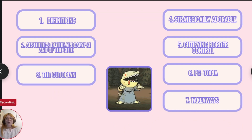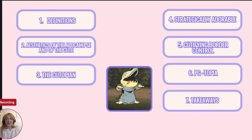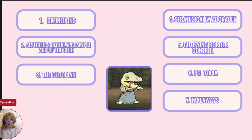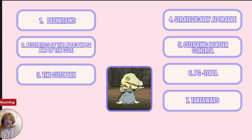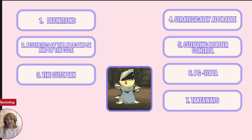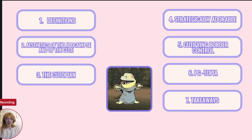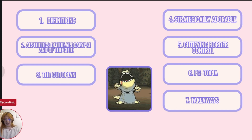Here's an overview of what we will cover today. We will start by defining some key terms that are essential for understanding the rest of the presentation. Then we'll move on to a discussion of the aesthetics of the apocalypse and how cute aesthetics are used in contrast. After that, we'll explore the cutopian, a term I use to describe games that juxtapose cuteness with serious themes.